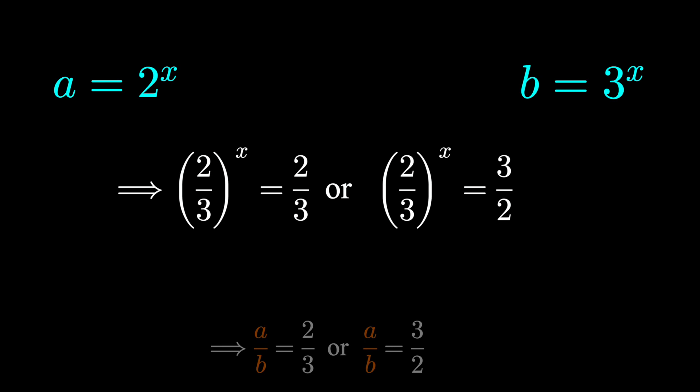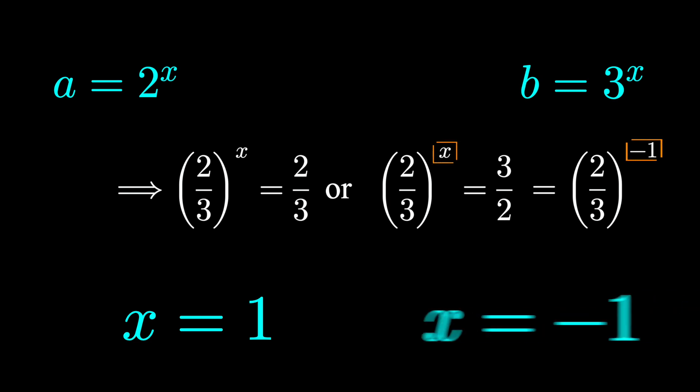And we're left with two relatively simple exponential equations. 2 thirds to the x equals 2 thirds. Since these bases are equal, that means their exponents must be equal. x must be 1. Or 2 thirds to the x equals 3 halves. We can make these bases similar by applying properties of negative exponents. If we raise this to the negative first, well then the bases are equal. And x must be negative 1.